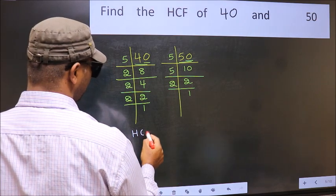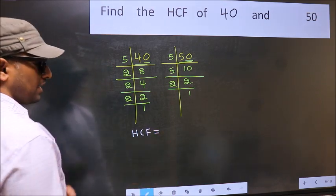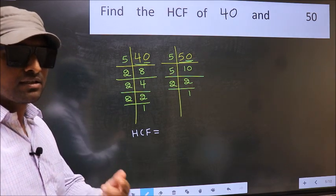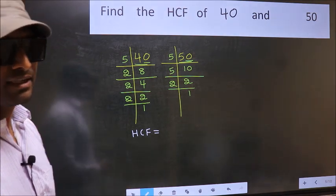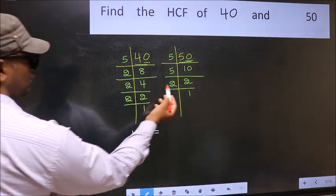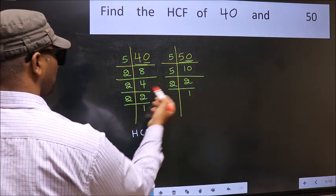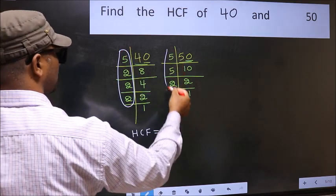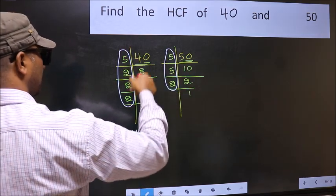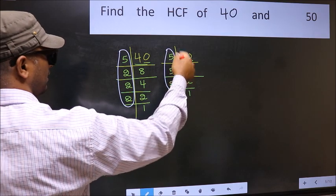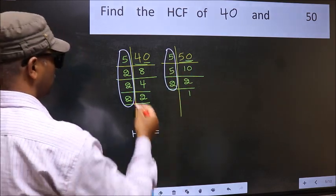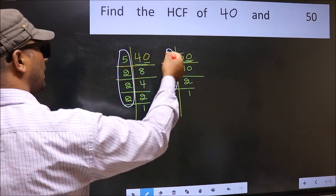Therefore our HCF is the product of the numbers which should be present in these 2 places, i.e., here and also here. Here and here. So now let us find the numbers which should be present here and here.